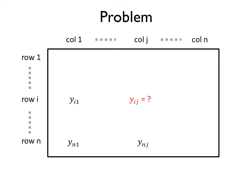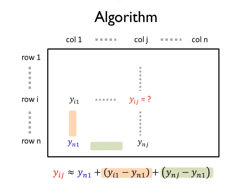For example, consider that we would like to estimate unknown value y_ij and we have observed entries y_i1, y_n1, and y_nj. Our algorithm derives an estimate by using a first order approximation of y_ij. Specifically, we show that y_ij is approximately equal to entry y_n1 plus the row difference between y_i1 and y_n1 plus the column difference between y_nj and y_n1.